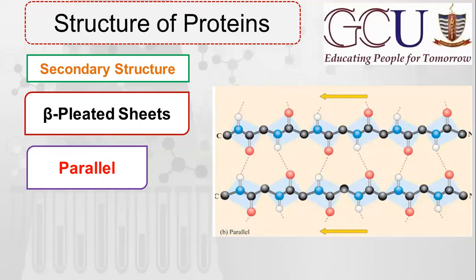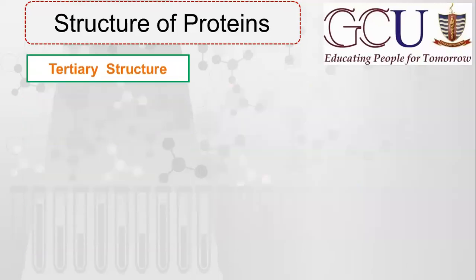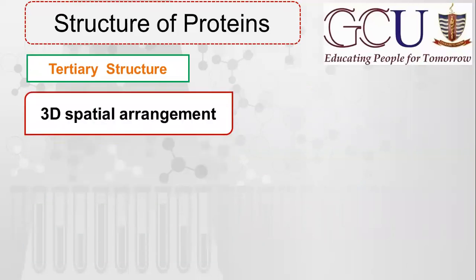So, just as alpha helix can be right-handed or left-handed, beta pleated sheets can be parallel or anti-parallel. Dear students, next is tertiary structure. Tertiary structure is the three-dimensional spatial arrangement. Proteins adopt a three-dimensional structure through twisting and folding in space. Primary structure is a linear sequence, secondary structure is folding, and now through further twisting, proteins achieve a three-dimensional special arrangement — that is the tertiary structure.